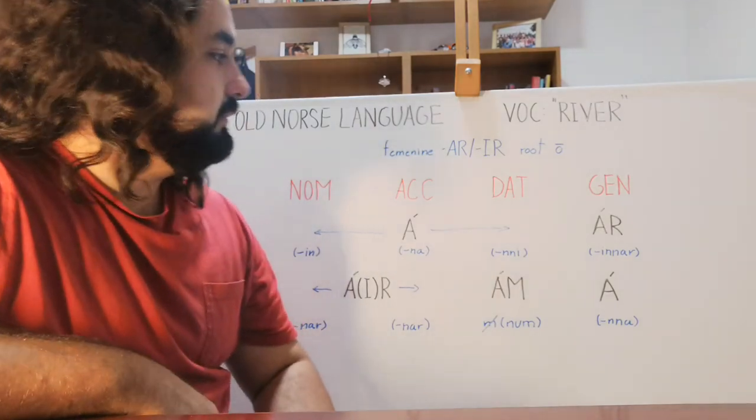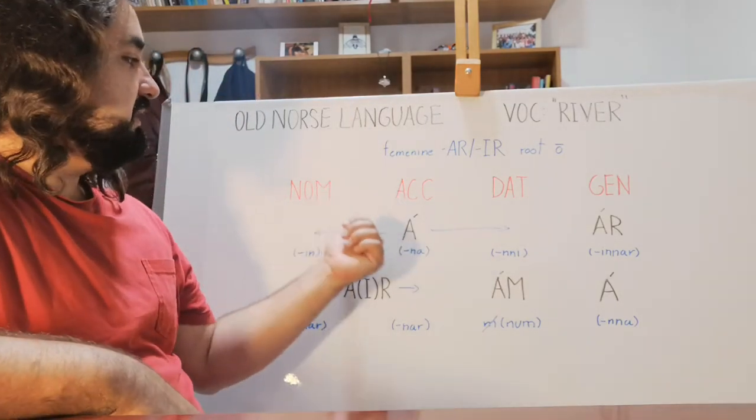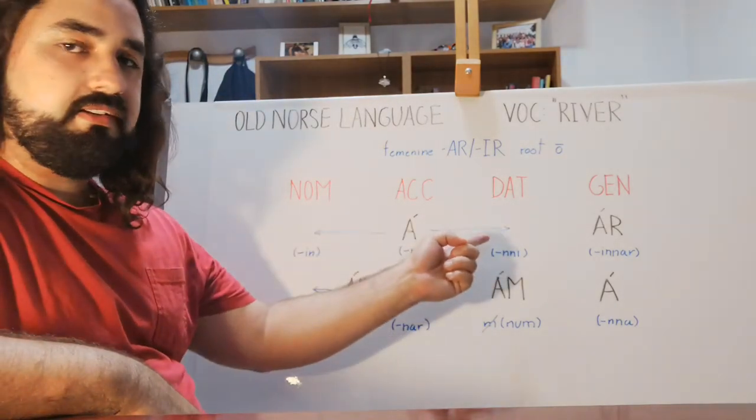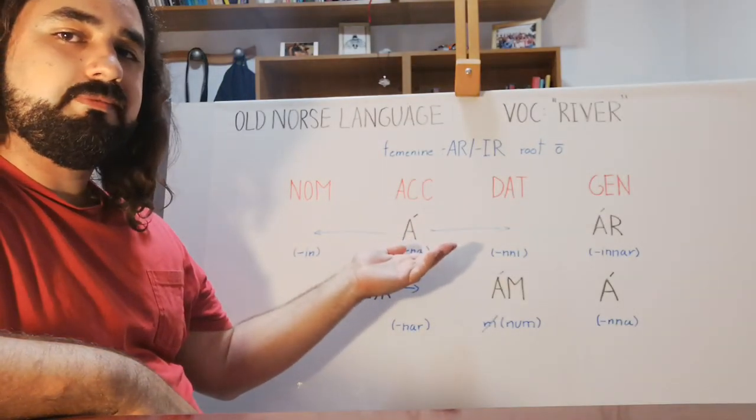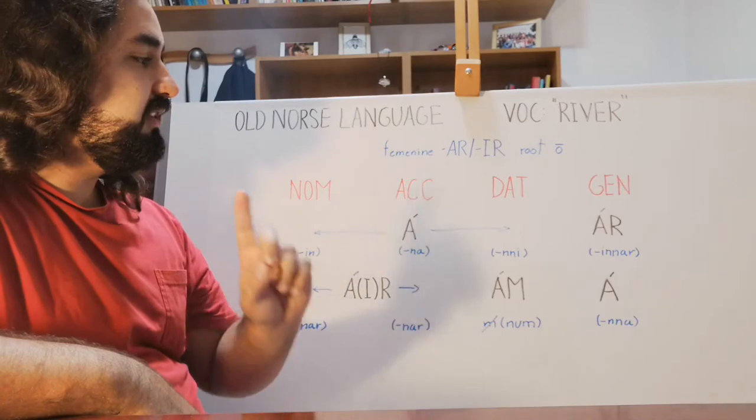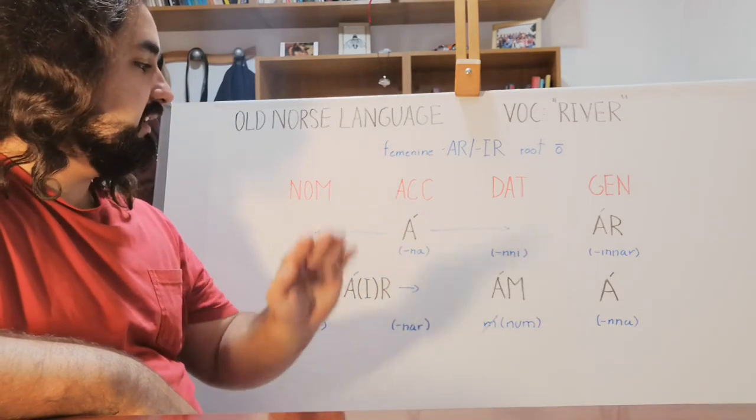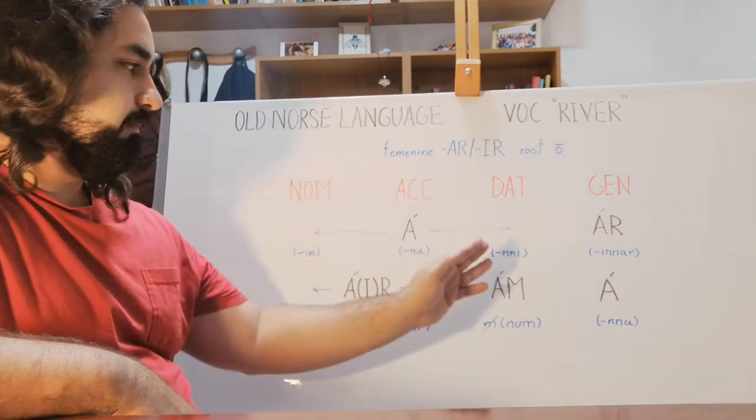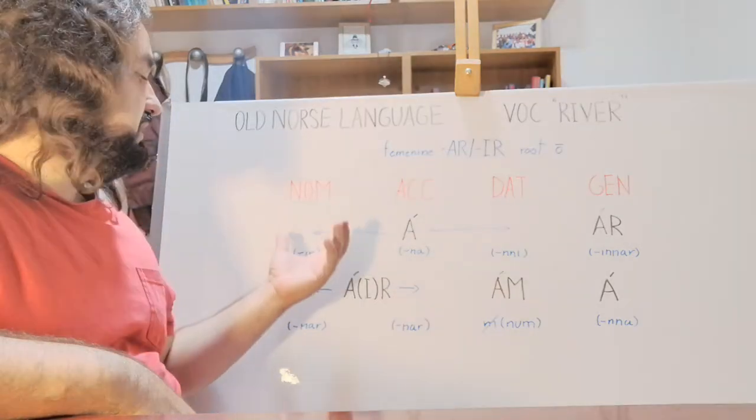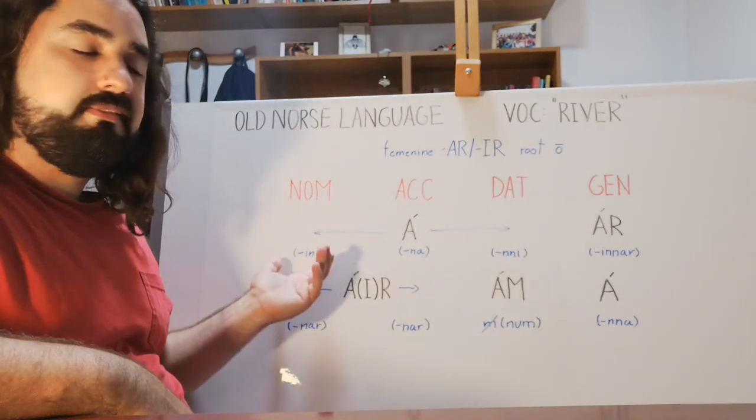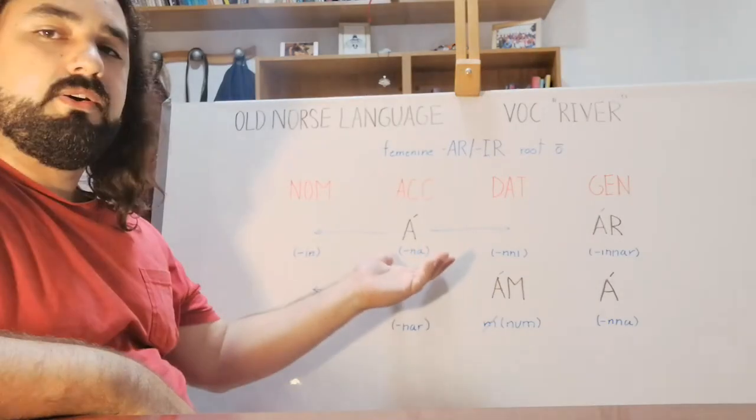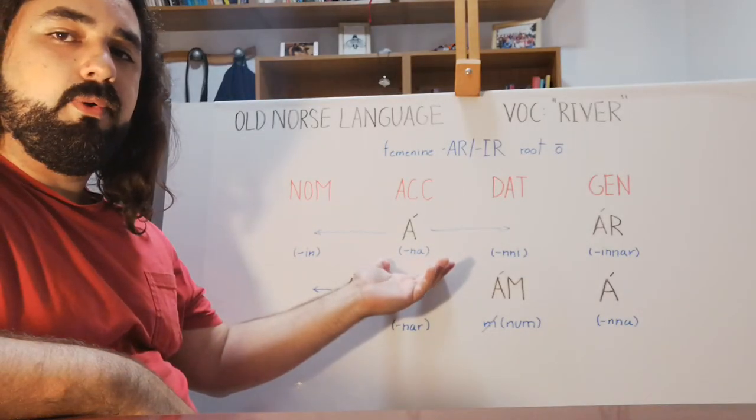It takes the following forms. For the nominative, accusative, and dative singular, it takes the base form á. But when you suffix the articles, it will take a different form for each of them. For instance, in the nominative singular, áin. In accusative, ána.